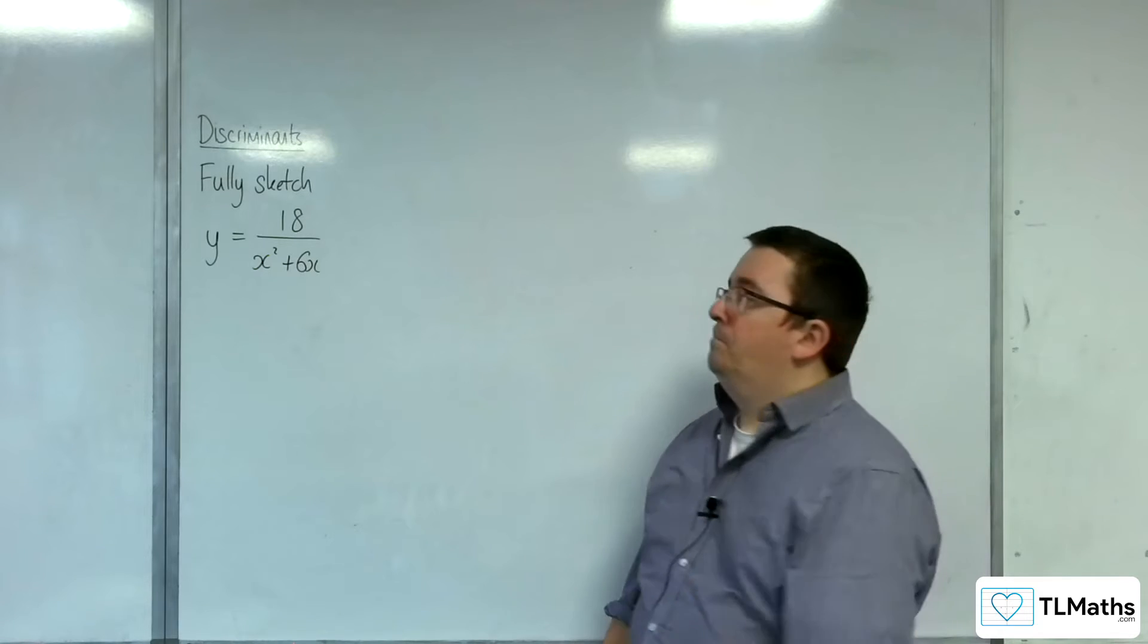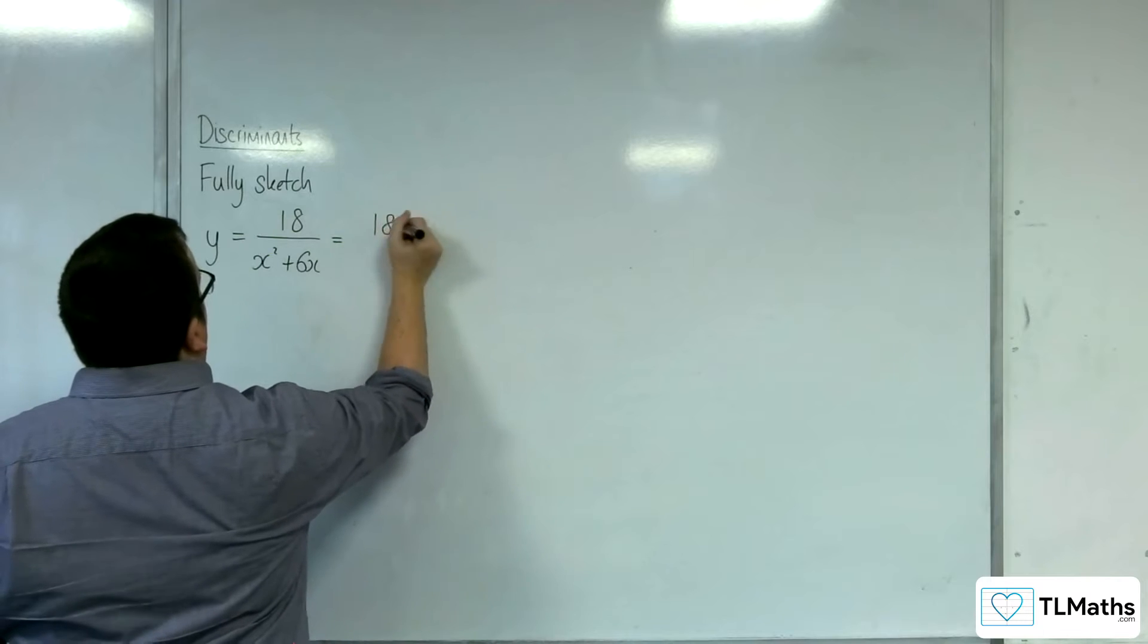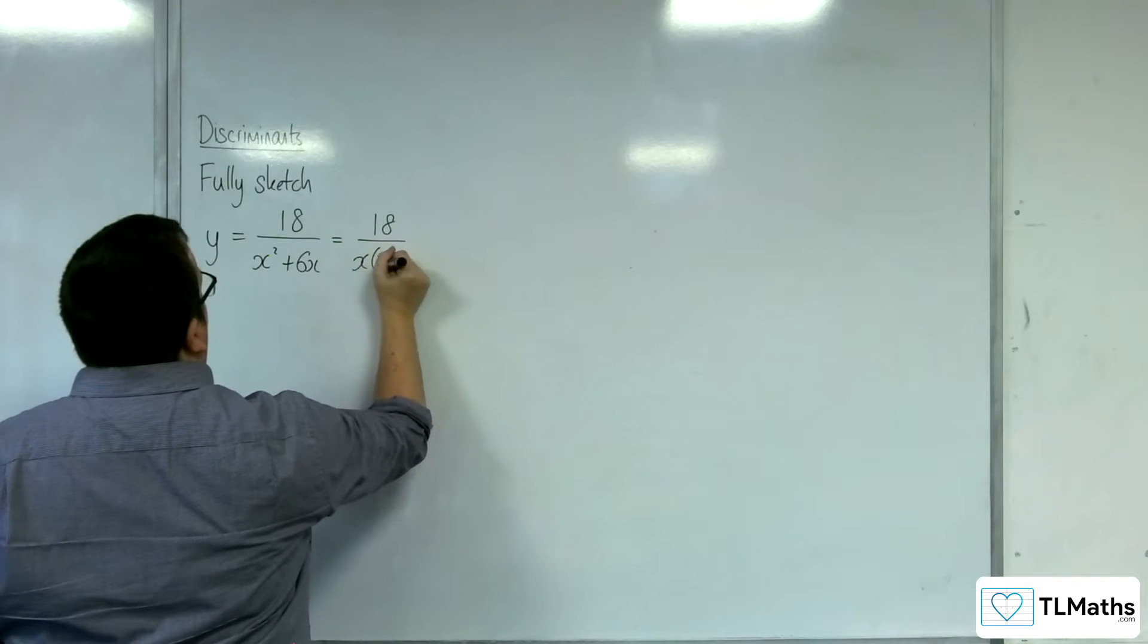So here we go. First of all, I am going to factorise the denominator and write that as x lots of x plus 6.